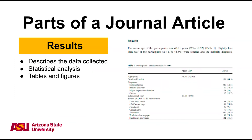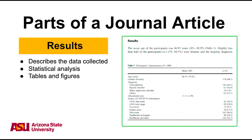After the method section is the results section. The results section describes the data collected and the statistical analysis used. It might also use tables and figures to illustrate key data points. It is important to note that a results section is an unbiased snapshot of the data collected from the experiment.